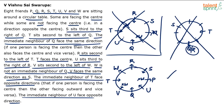This is the final arrangement: Q, V, T, W, R, S, P, U around the circular table. Facing center: T, V, Q, U, and S. Facing outwards: W, R, and P.